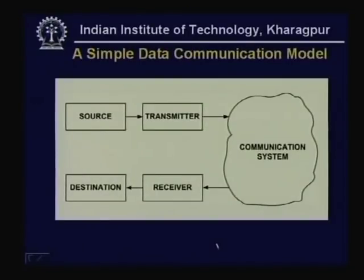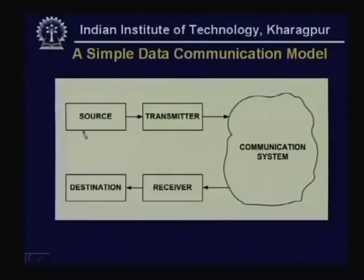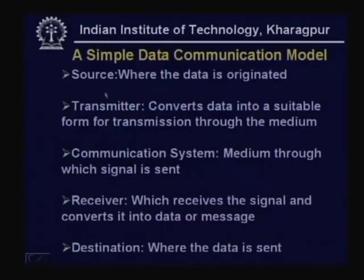Before discussing the various topics covered in this lecture, I shall first give a very oversimplified model of a data communication system to put you in proper perspective. Here is the oversimplified model: you have a source, which is essentially where the data originates. The source can be a computer, a peripheral, or some communication equipment like cell phones, PDAs, and so on.